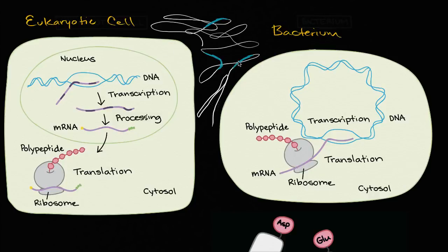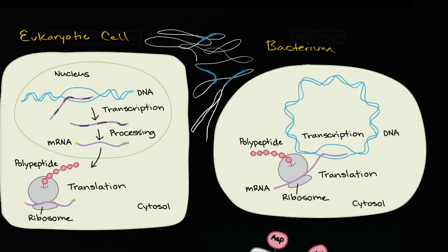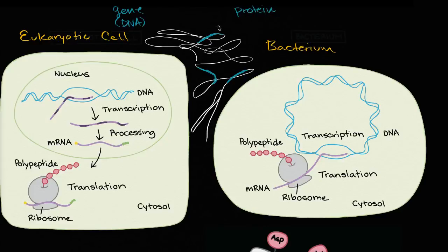The key question is how do you go from the information encoded in these genes, encoded as sequences of DNA, how do you go from that gene to protein? Protein is made up of polypeptides, which are made up of amino acids. This is often called the central dogma of biology.